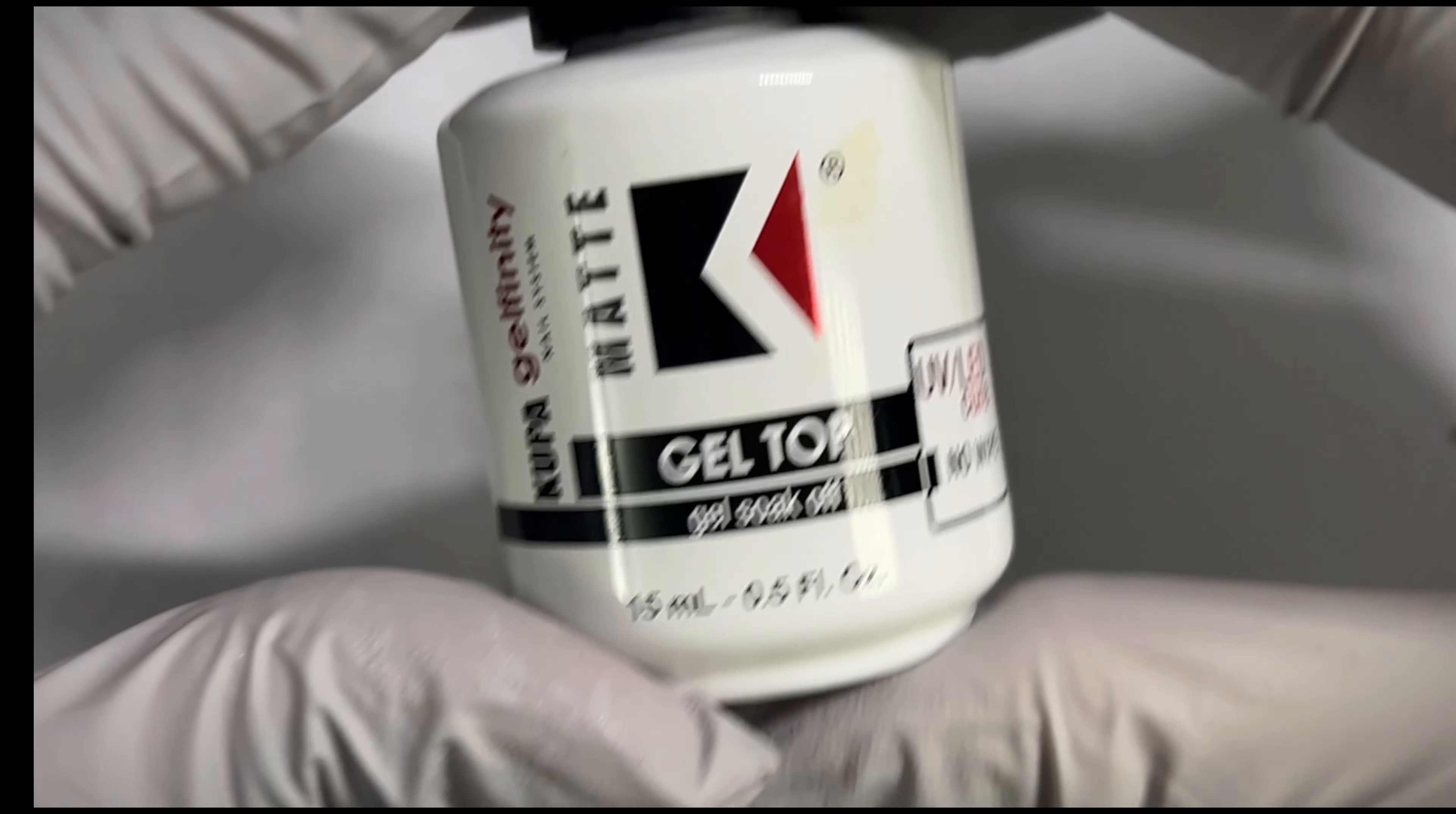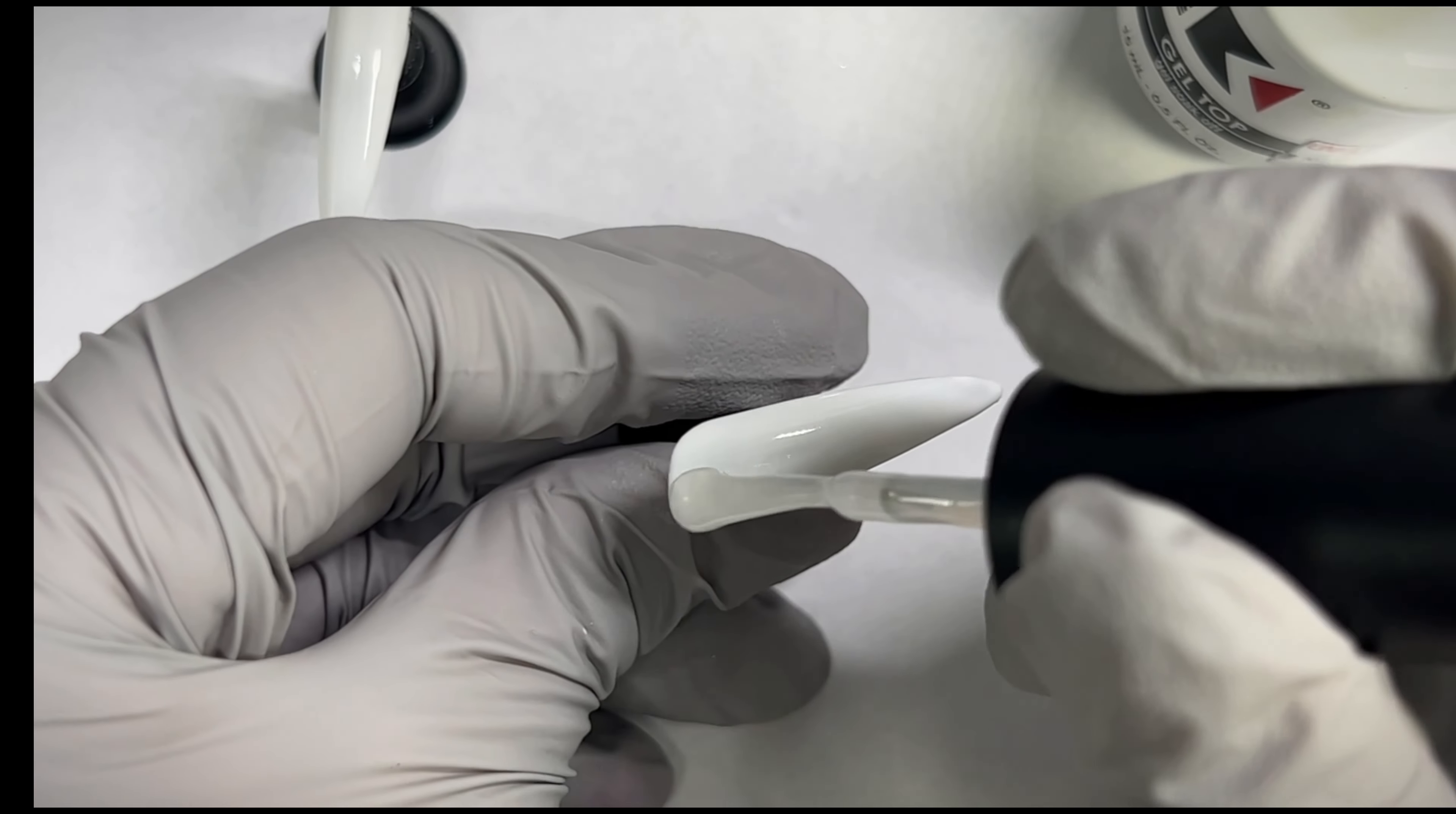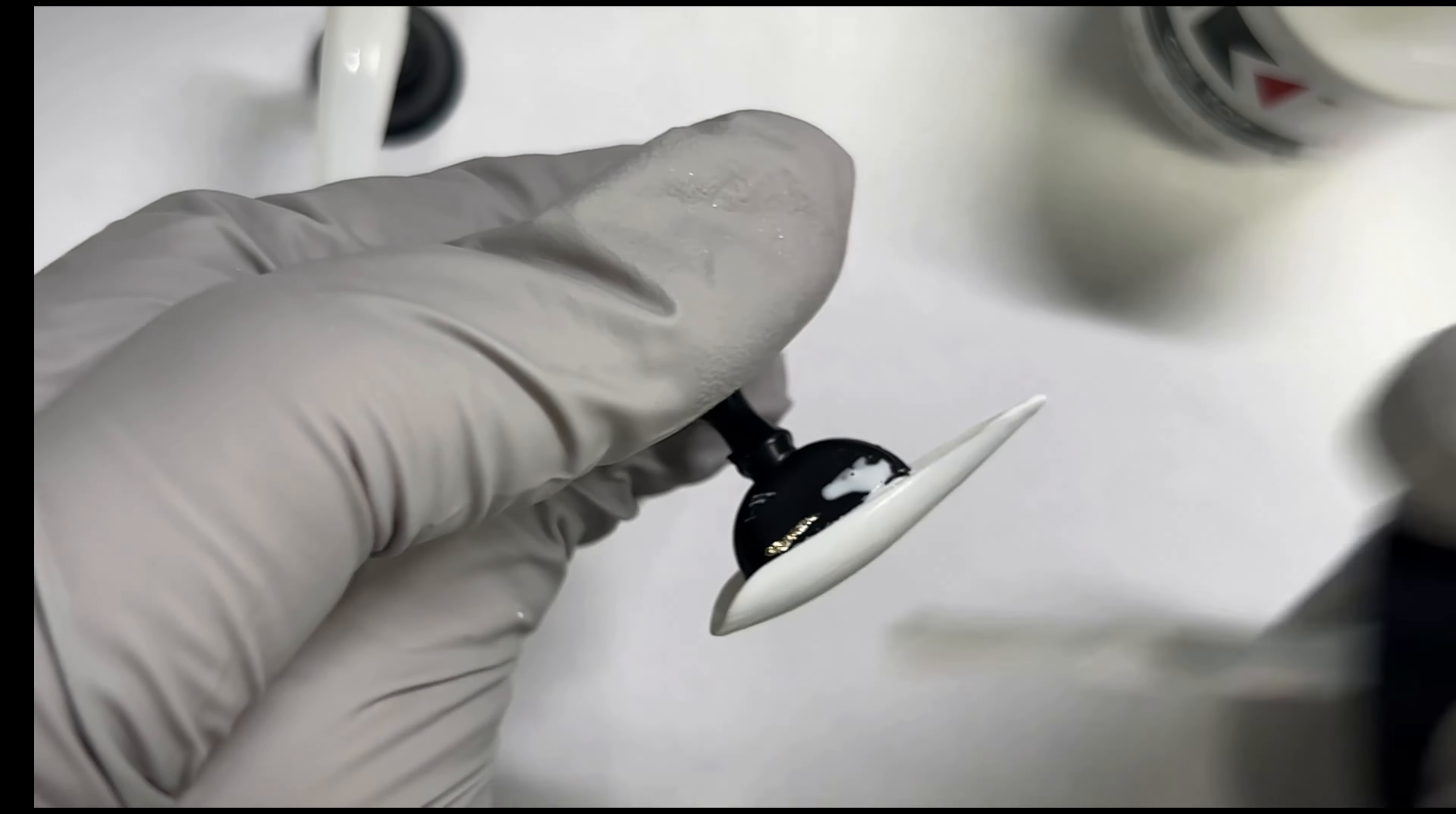To use these inks, you're going to need to use it on top of a matte surface. So I got this matte top coat from Amazon. I'm going to apply a thin layer of this and cure it for 60 seconds.